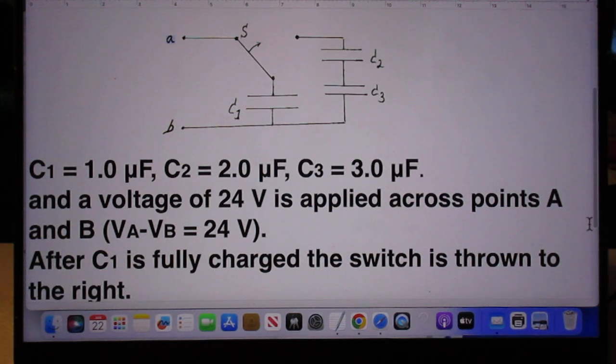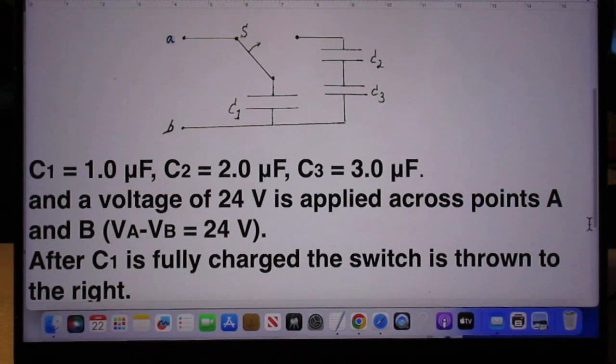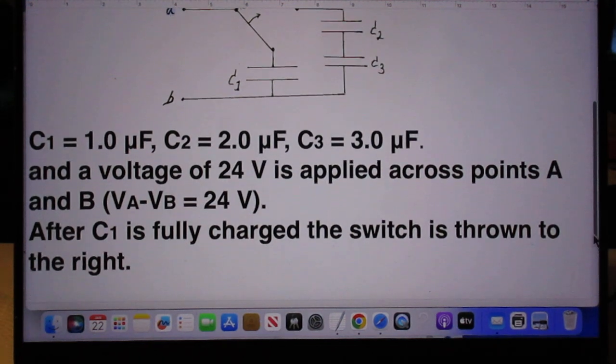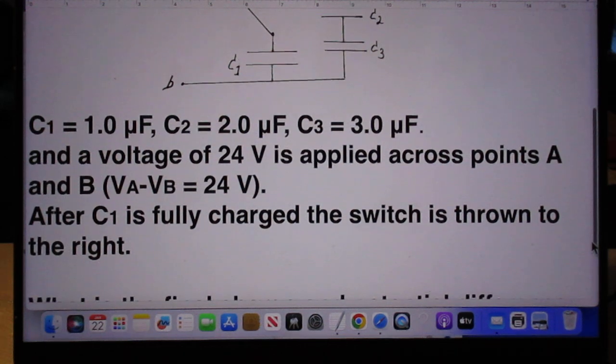A voltage of 24 volts is applied across points A and B, so VA minus VB is 24 volts. After C1 is fully charged, the switch is thrown to the right.